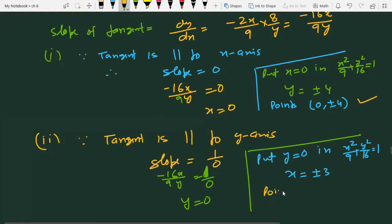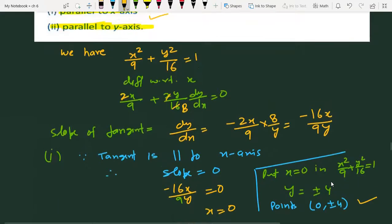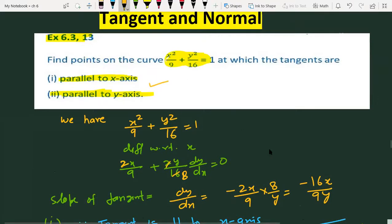So the points are (3, 0) and (-3, 0). This was Exercise 6.3, Question 13. It was an easy question.